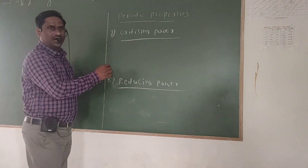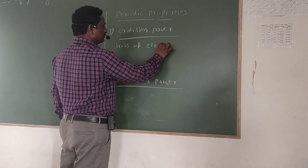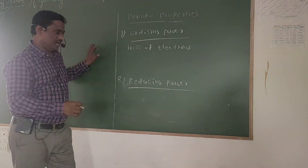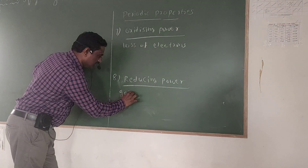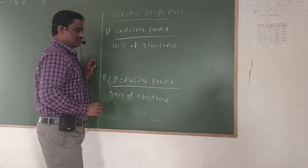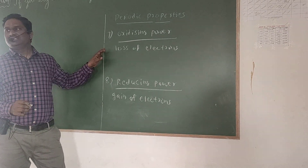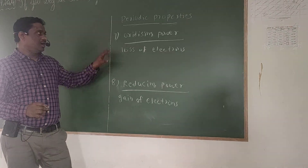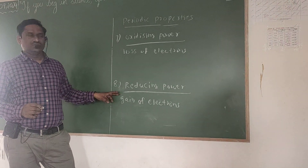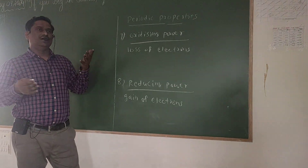Oxidizing power means nothing but loss of electron. When they are losing electrons, that is called oxidizing power. And when they are gaining electrons — gain of electrons — that is called reducing power. So, sometimes this word will be used instead of metallic character or non-metallic character — oxidizing power and reducing power.